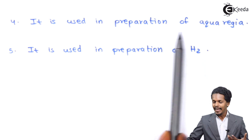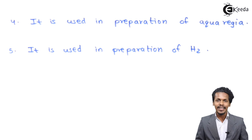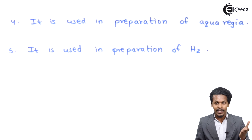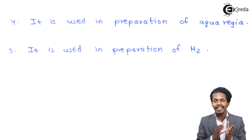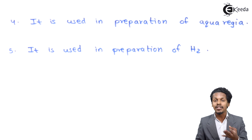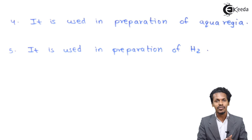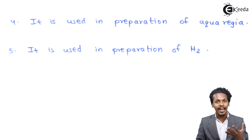The fourth point: it is used in the preparation of aqua regia, which we have also discussed in an earlier lecture. Aqua regia is a composition of HCl and HNO₃, where we use one mole of HNO₃ and three parts of HCl. This mixture is sufficient to react with noble metals like platinum and gold.